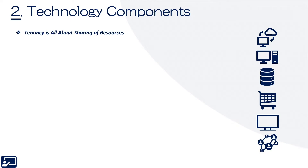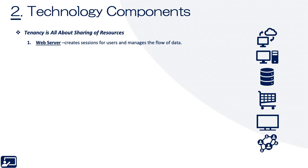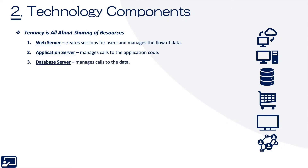Topic number two: technology components. Tenancy is all about the sharing of resources. A web server creates sessions for users and manages the flow of data. An application server manages calls to the application code. A database server manages calls to the data. For example, when you log in to Facebook, you go to a web page and put in your username and password — that session is managed by the web server. When you click the button, the application server makes calls to the application code and sends the appropriate values to the database server to validate your account.